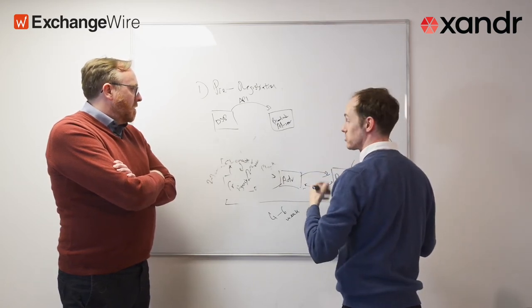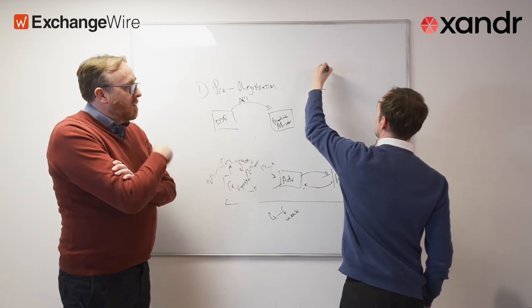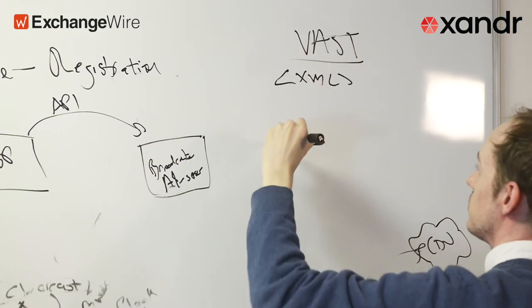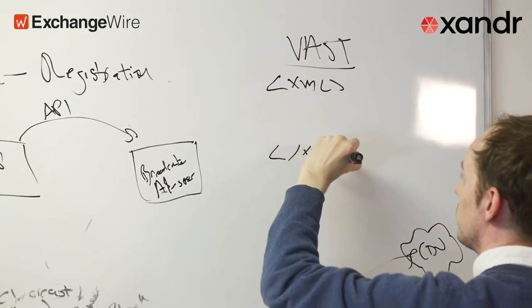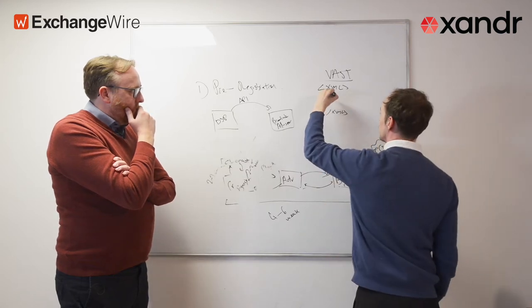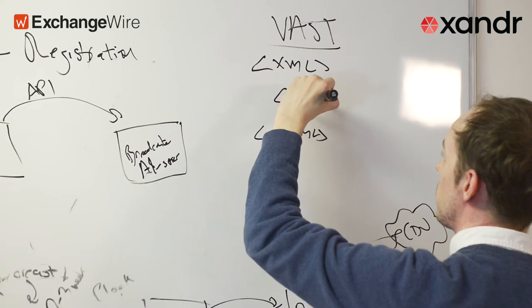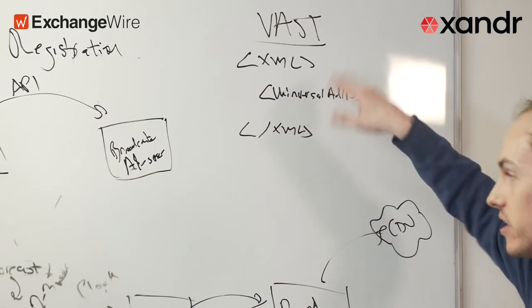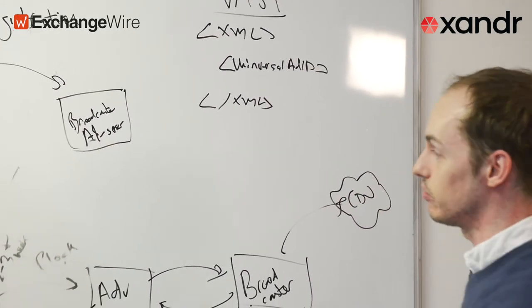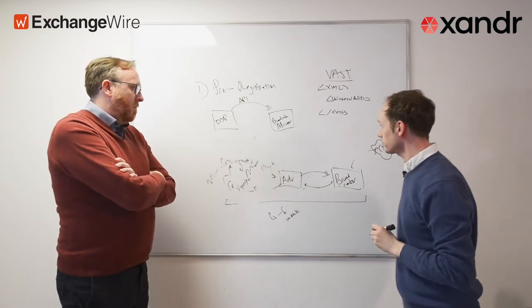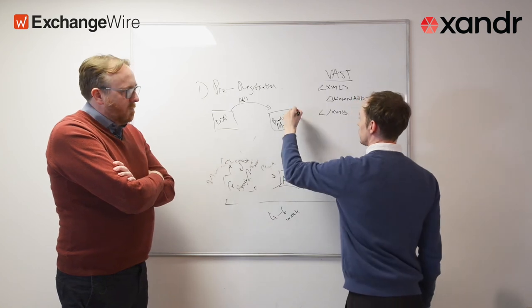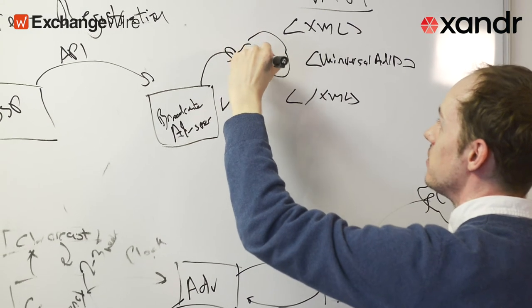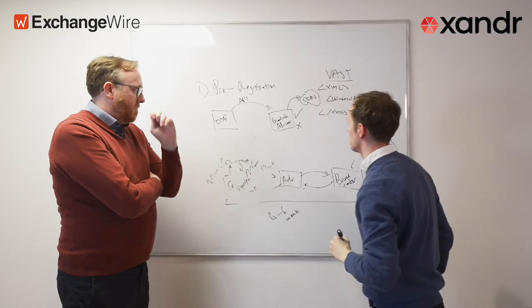What this API call actually looks like: in the payload will be an actual example of the creative. If you've heard of VAST—Video Ad Serving Template—this is an XML file that's included in the API call. As an industry, we've agreed to include a Universal Ad ID node, which is an XML node that includes the clock ID that has been provided by Clearcast.